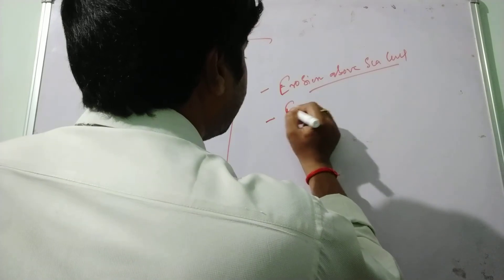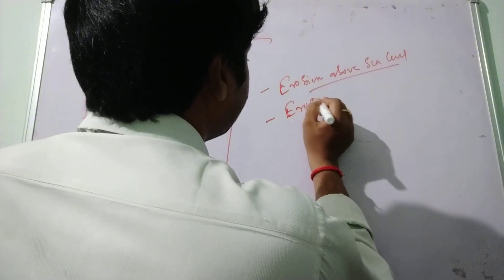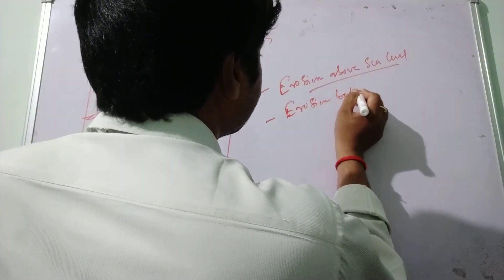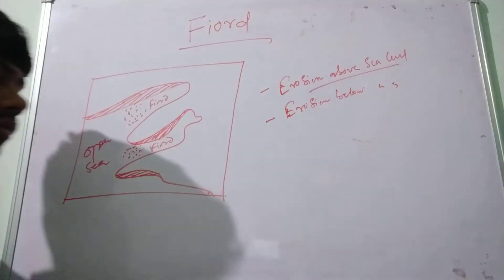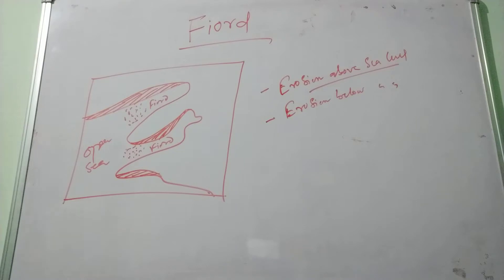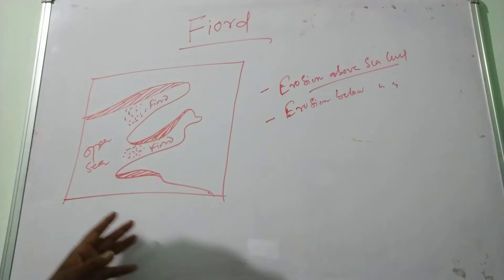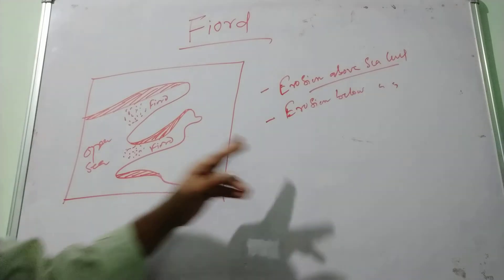Next, erosion below the sea level. Glaciers are capable of eroding their beds even after entering into the sea, until flotation actually occurs. According to this concept, fjords are formed due to erosion below the sea level.